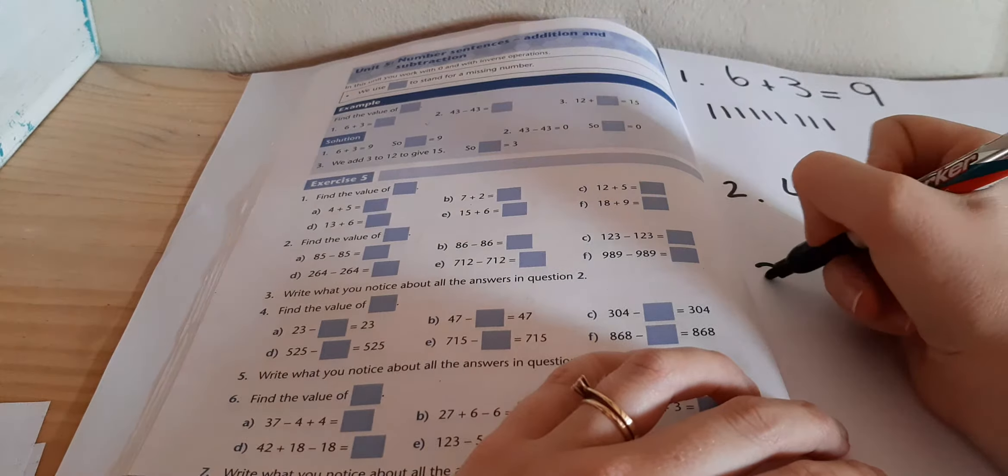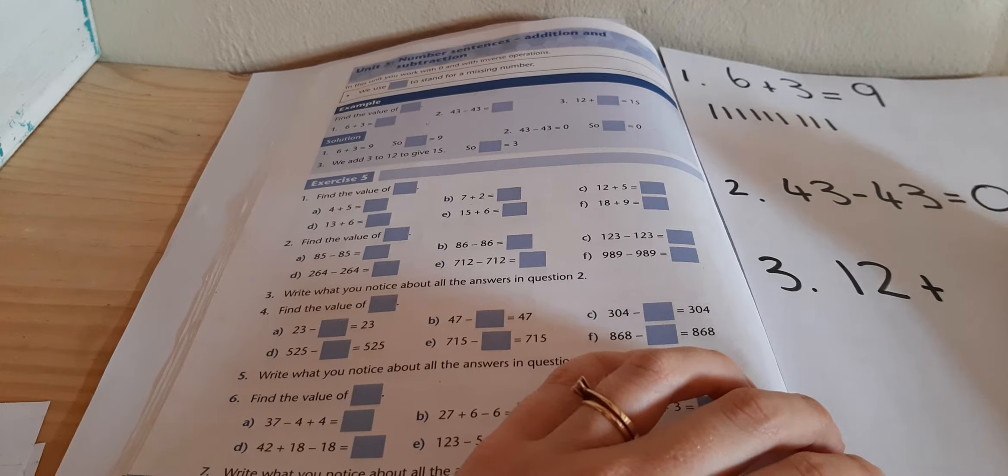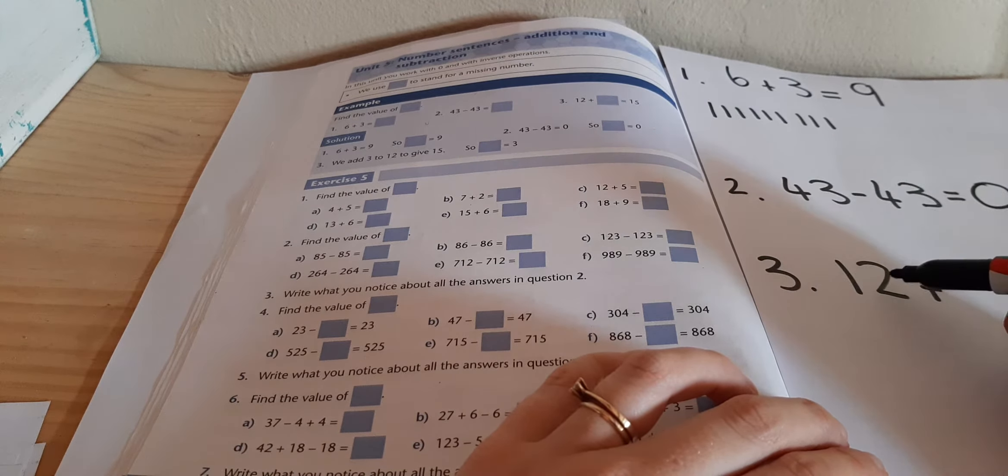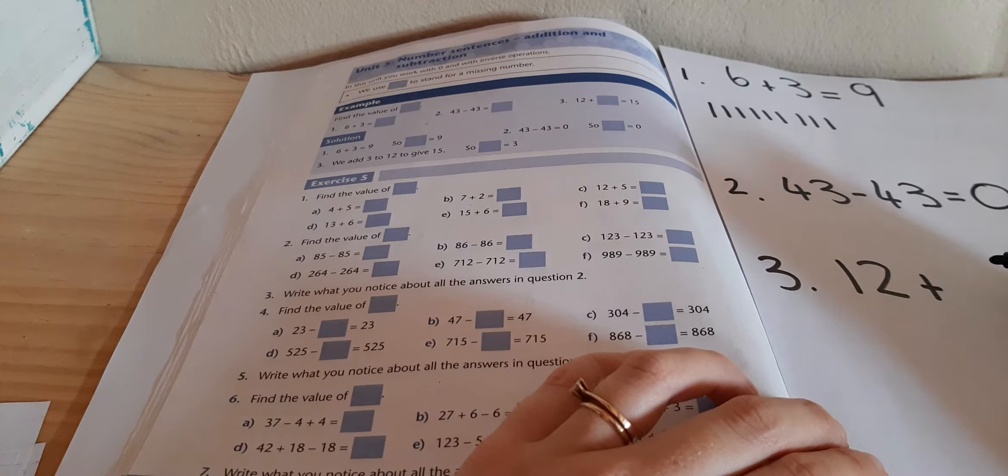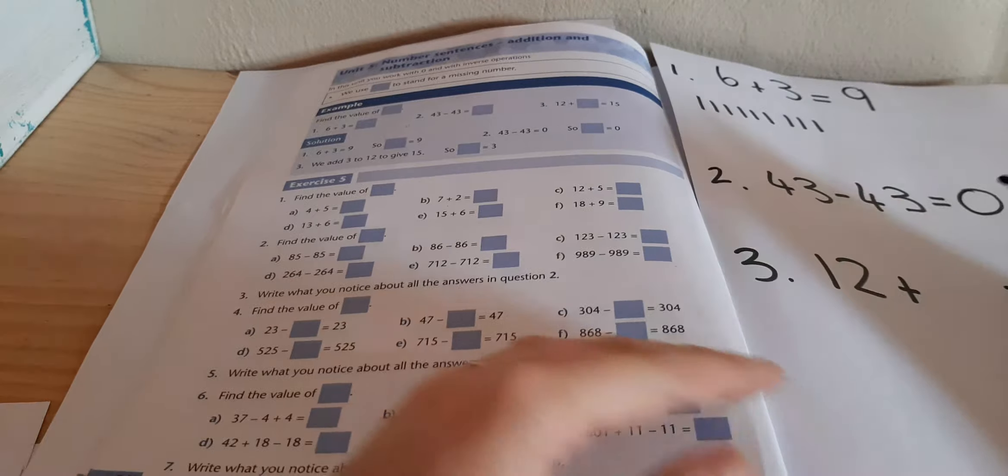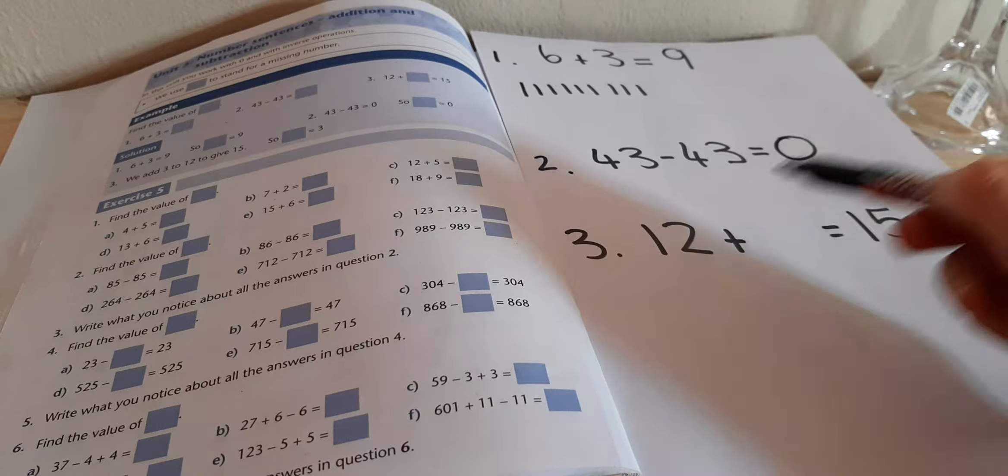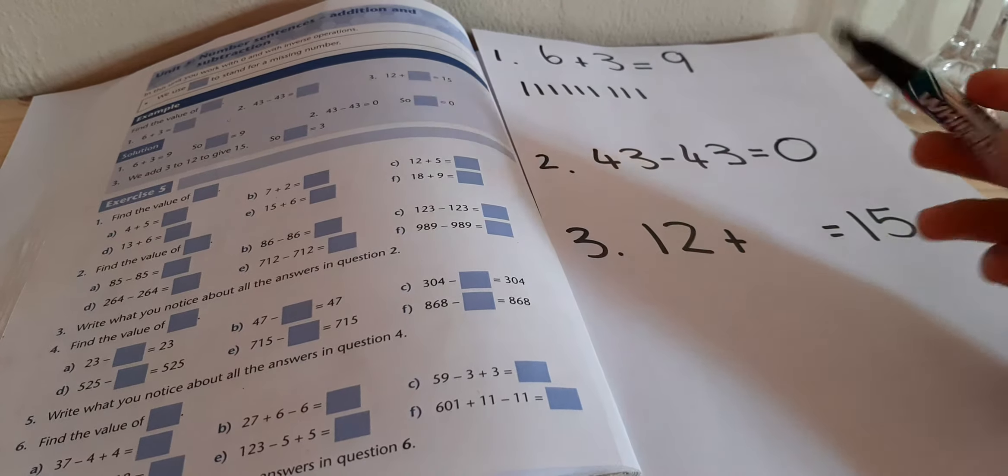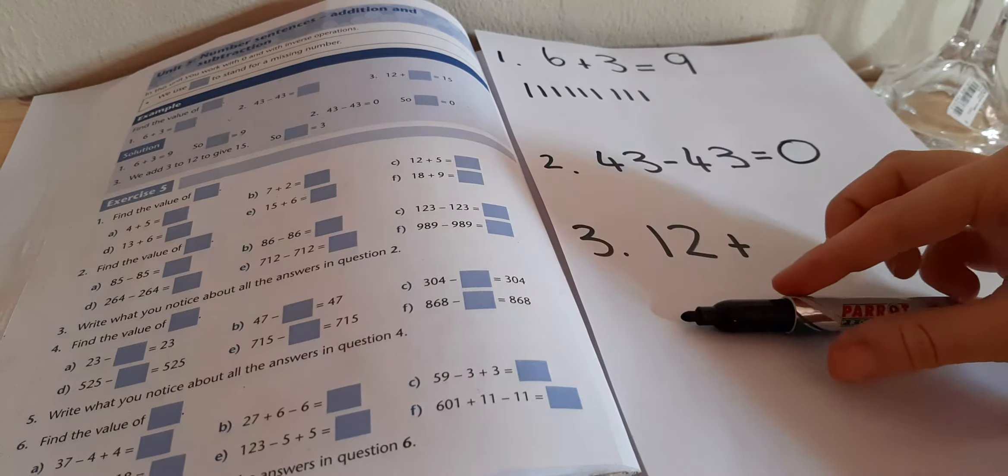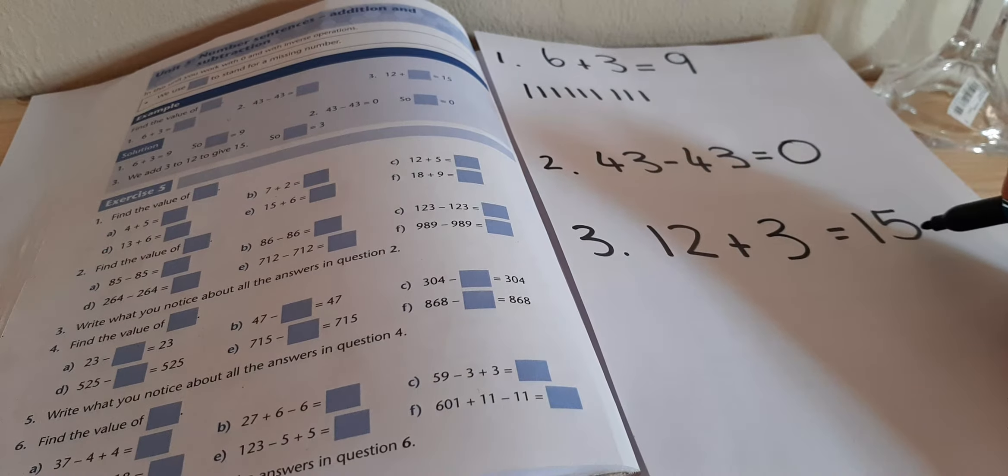Now this last one, 12 plus something equals 15. So for these ones, it is saying if you have 12 and you add something on and you get 15, how much do you add on to get from 12 to 15? So how do I get from 12 to 15? Now, you can go in your head and you can go 12, 13, 14, 15. And you know that 12 plus 3 is 15.